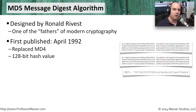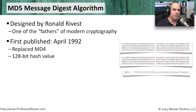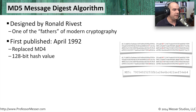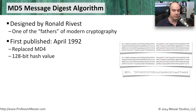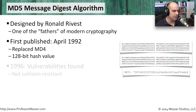The MD5 hash algorithm itself was published in April of 1992. As the name implies, MD5 comes after MD4. The MD5 message digest algorithm produces a 128-bit hash value, so the information you get once you hash something is 128 bits long.